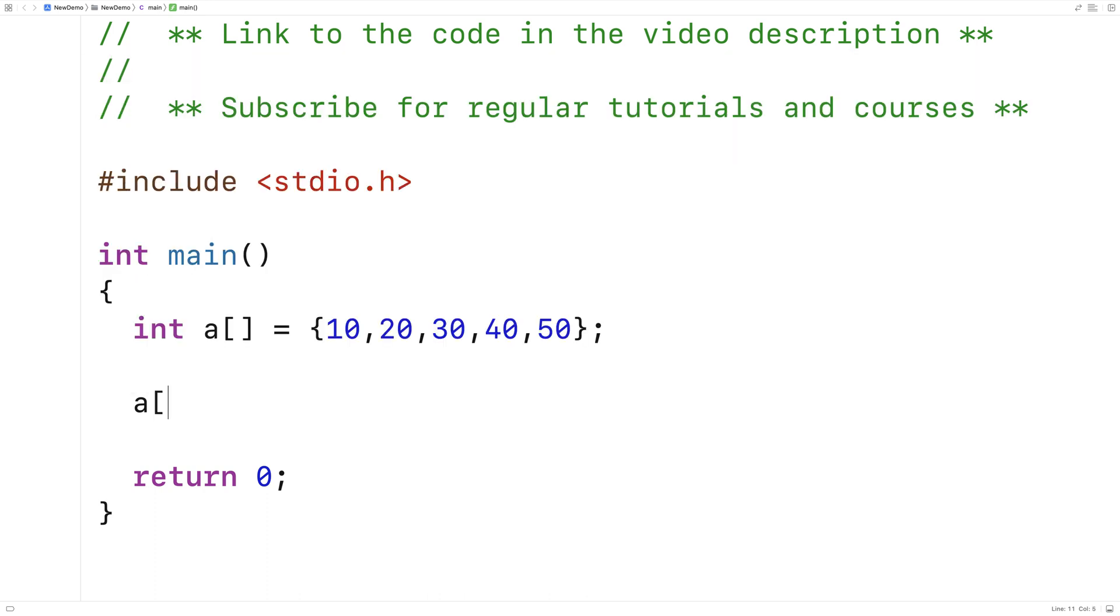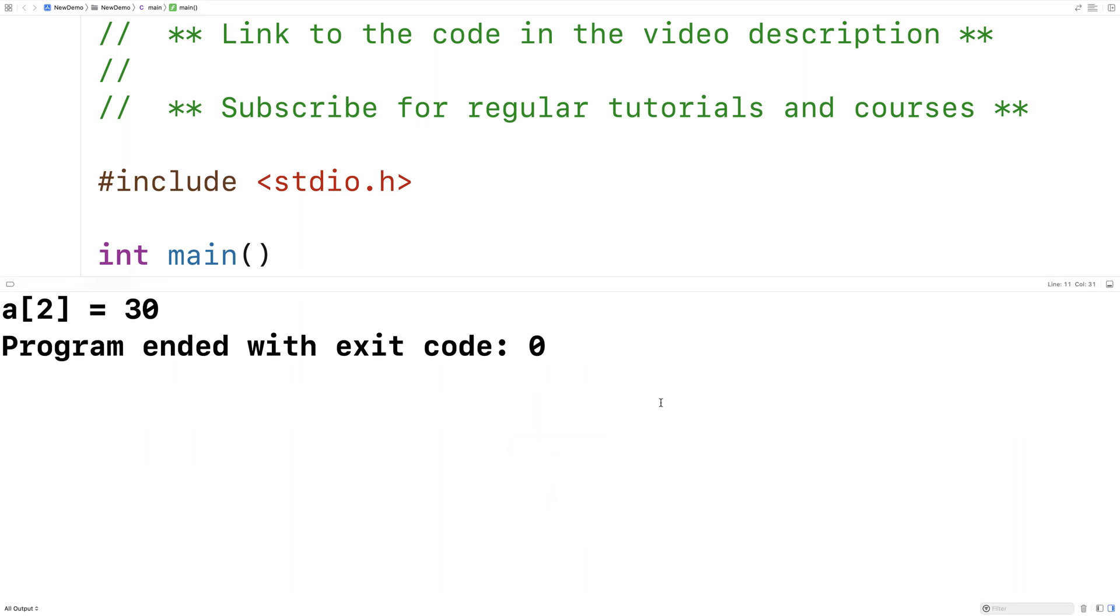And normally we could access these values by saying a open bracket maybe 2 close bracket, and we can print this out. We can say printf a2 is equal to percent d slash n. We could output the value in the index 2 of this array a, and if we save it and run it, we're going to get 30 because 2 would be the third element in the array.